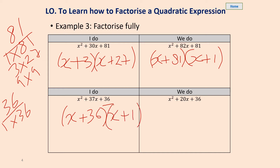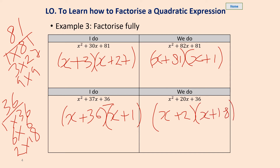Pause the video and have a go at this one. We could do 6 times 6 — well that's going to give me 12. Or 2 times 18: 2 times 18 is 36, but when I add them together I'm going to get 20. So I'm going to have x plus 2 and x plus 18. I'll multiply that out and simplify it: I'm going to get x squared plus 20x plus 36.